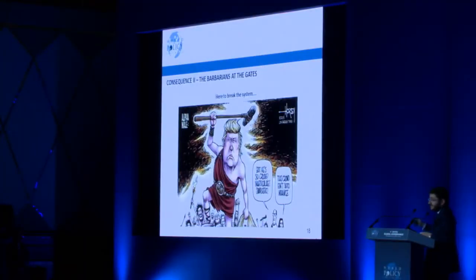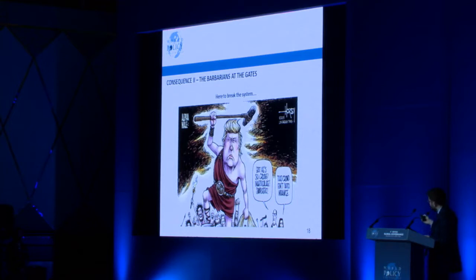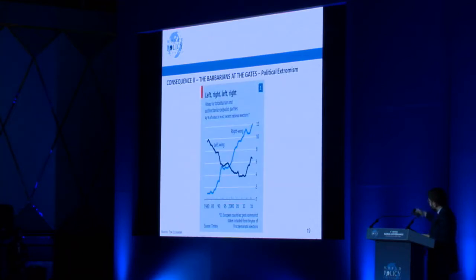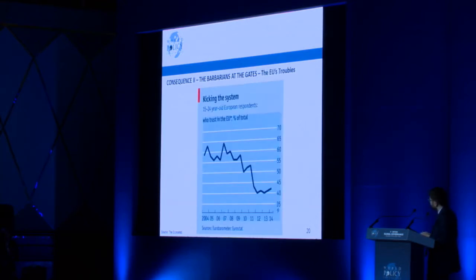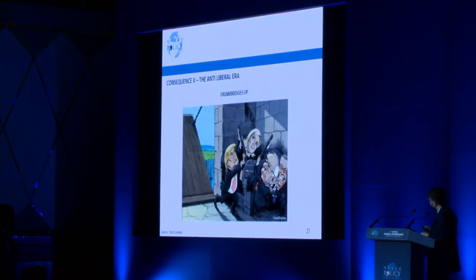These are the barbarians at the gates — some of them are no longer at the gates; some have broken into the political system. This shows support for extreme right and left parties in 33 European countries over a 15–20 year period, and the decline of support for the EU as a project across European countries. This is what The Economist has called 'drawbridges up': an anti-liberal era that is anti-trade, anti-globalization, anti-cosmopolitanism.